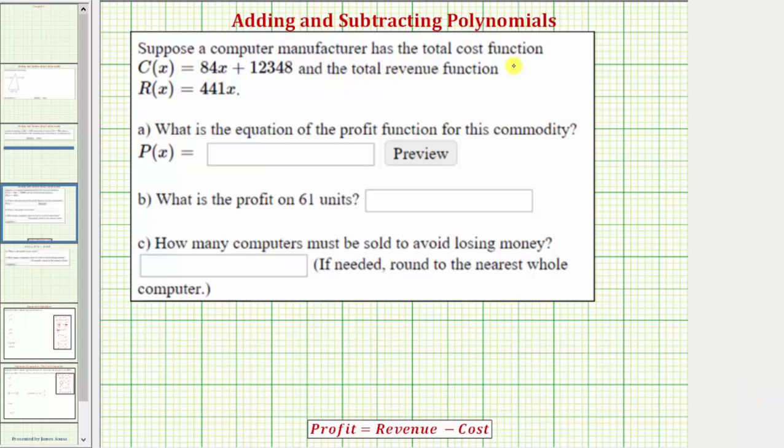Suppose a computer manufacturer has the total cost function C(x) equals 84x plus 12,348 and the total revenue function R(x) equals 441x. Here we're assuming x equals the number of computers. For part a, we're asked what is the equation of the profit function for this commodity.